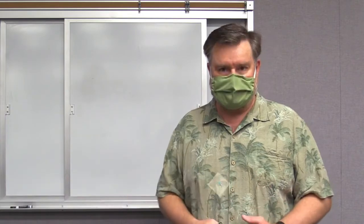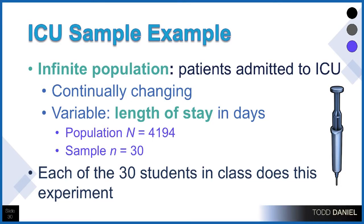Having done this experiment in which we have an infinite sample and we have selected 30 cases, we're now going to explore the central limit theorem and the sampling distribution of the mean. Our infinite population was the number of patients who were admitted to the ICU. This is continually changing, so the sampling data we get this week will be different than next week or a month from now. Our variable of interest was the length of stay in days. The population size is 4,194 and we were taking samples of size 30.